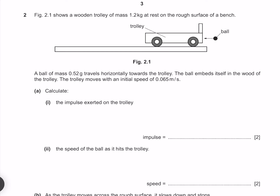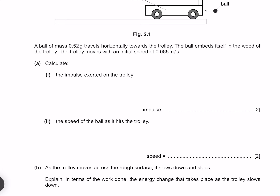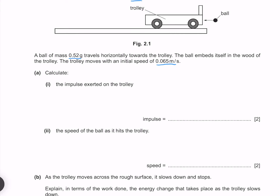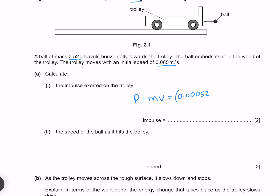Figure 2.1 shows a wooden trolley of mass 1.2 kg at rest on the rough surface of a bench. A ball of mass 0.52 g travels horizontally towards the trolley. The ball embeds itself in the wood and the trolley moves with an initial speed of 0.065 m/s. The impulse exerted on the trolley equals the final momentum of the trolley-ball system: mass is 0.00052 kg plus 1.2 kg, multiplied by 0.065, giving me 0.078 kg·m/s.